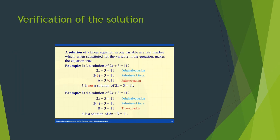Verification of the solution: a solution of a linear equation in one variable is a real number which, when substituted for the variable in the equation, makes the equation true. For example, is 3 a solution of 2x plus 3 equals 11? Substituting x equals 3: left-hand side does not equal right-hand side, so 3 is not a solution. Is 4 a solution? Substituting x equals 4: 2 times 4 plus 3 equals 8 plus 3 equals 11. Left-hand side equals 11 and right-hand side is 11, therefore 4 is a solution of 2x plus 3 equals 11.